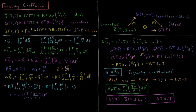Setting the two expressions for ΔG̅₃ equal: −RT ln φ = −RT ∫₀ᴾ (Z − 1)/P dP. Dividing both sides by −RT, we get that the natural log of the fugacity coefficient equals the integral from 0 to P of (Z − 1)/P dP. The change in molar Gibbs energy going from a non-ideal to an ideal standard state is −RT ln φ, which approaches zero as the gas becomes more ideal.